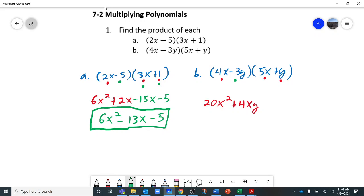Then we'll do the negative 3y by the 5x and by the y. Negative 3y times 5x is negative 15xy. Those two can go together. And negative 3y times y is negative 3y squared.